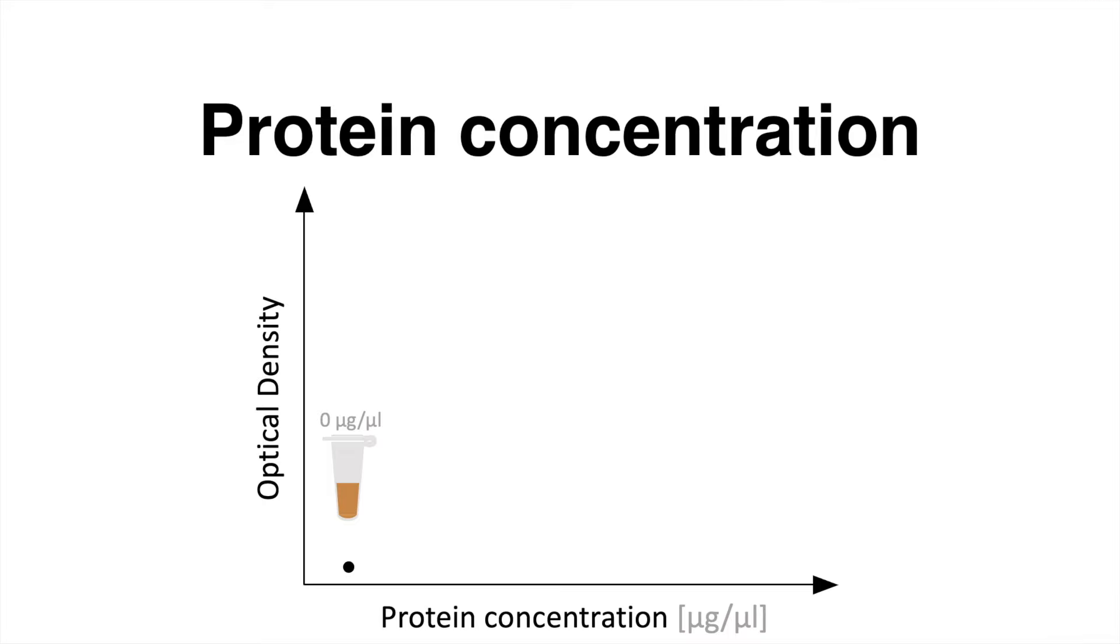The optical density is measured for 1 microgram per microliter and higher concentrations such as 2 and 4 micrograms per microliter. That generates a linear curve in which the optical density increases proportionally with protein concentration. Now,